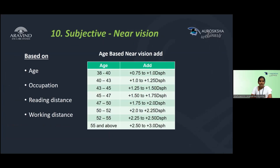Step 10 is near vision correction. Once distance vision correction is complete, check uncorrected near vision with the distance correction. Based on age, occupation, reading distance, and working distance, add the near vision correction. An age-based near vision correction table is used as a reference guide.